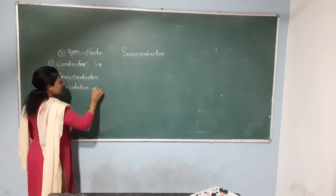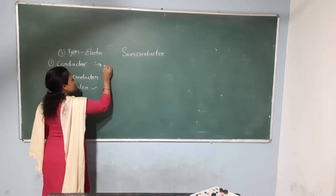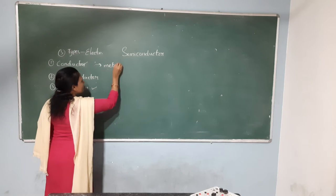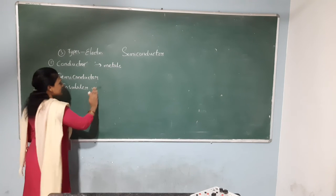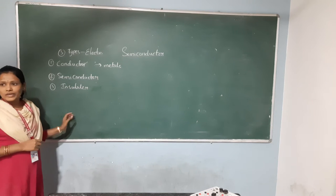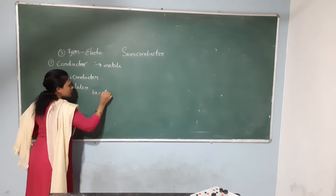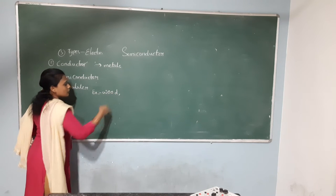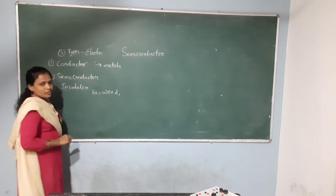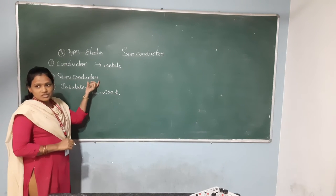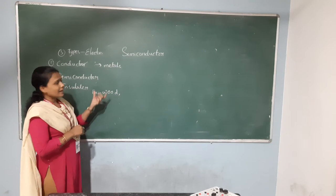What is an insulator? Example of a conductor is metals. What is an insulator? An insulator is a substance that does not allow the flow of electricity. What is a semiconductor? A semiconductor is a substance whose properties lie in between a conductor and an insulator.